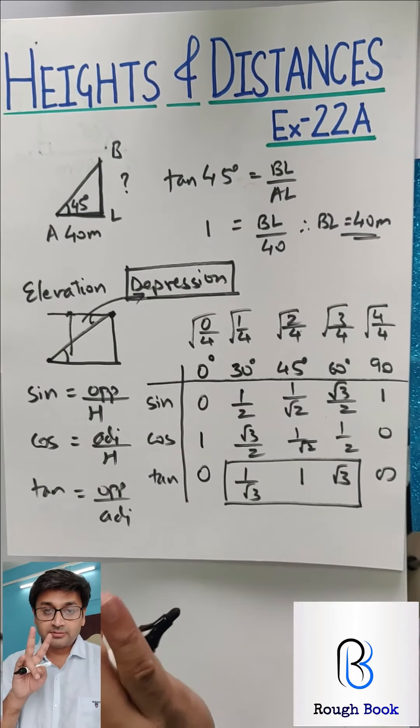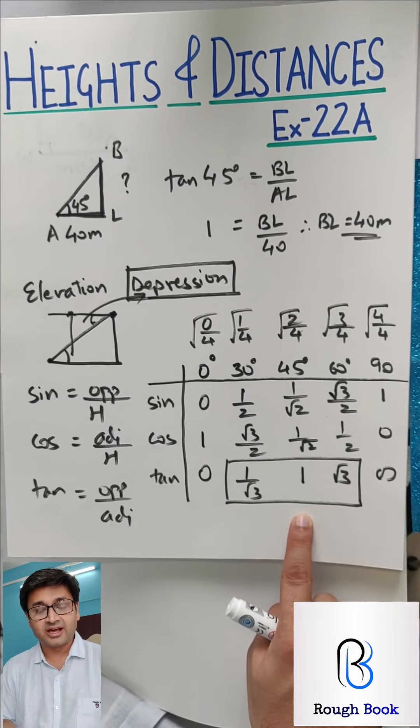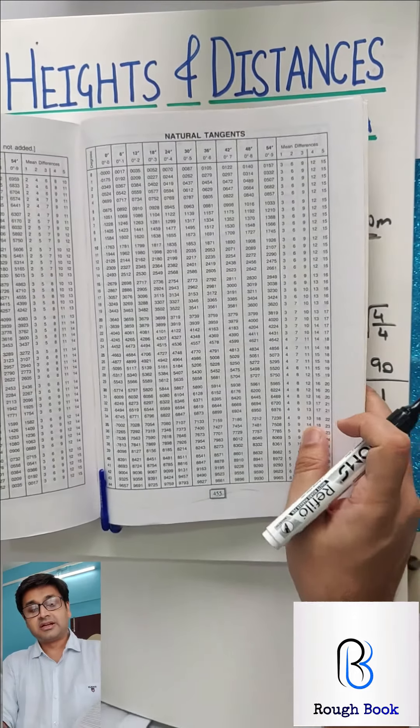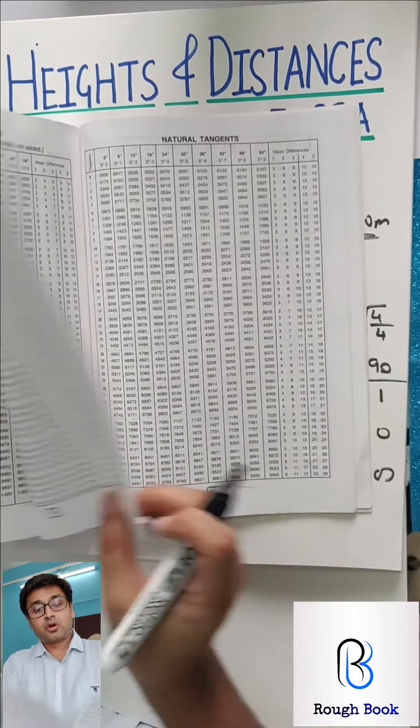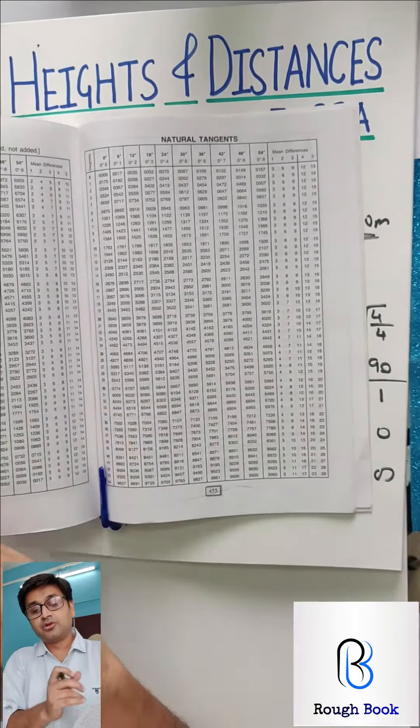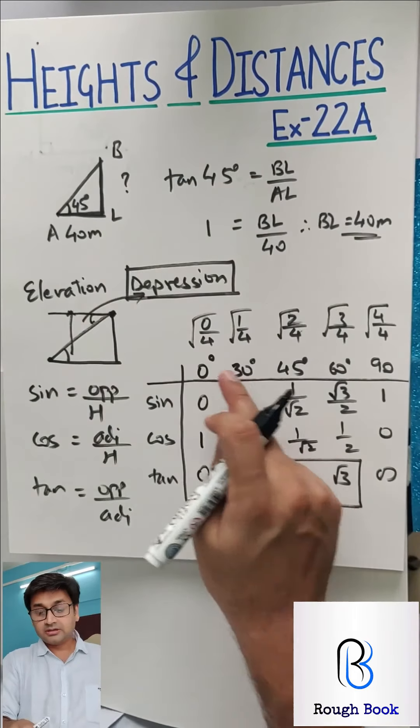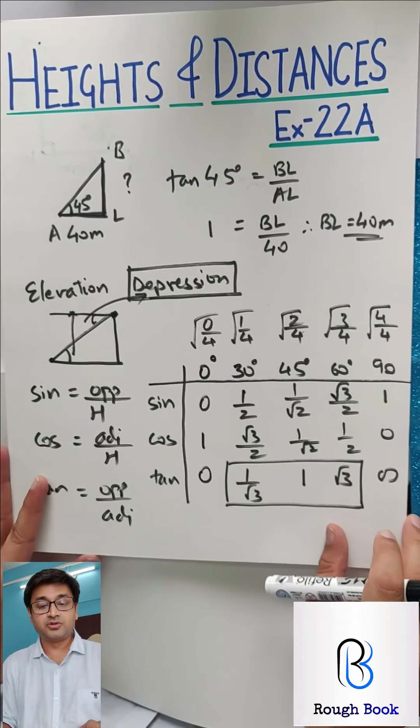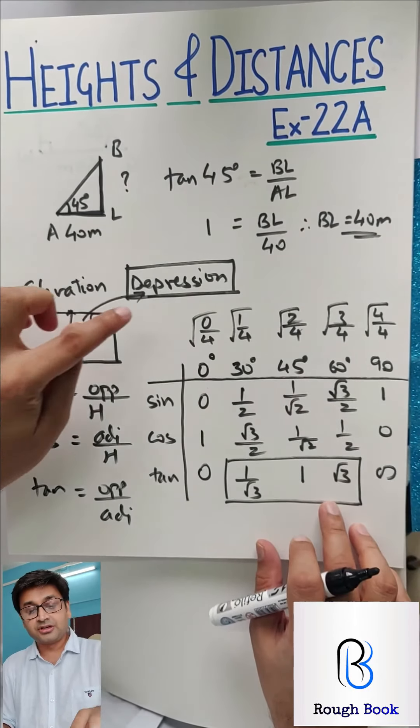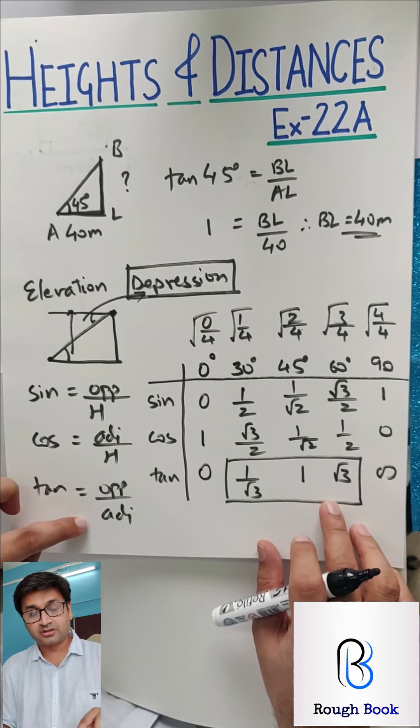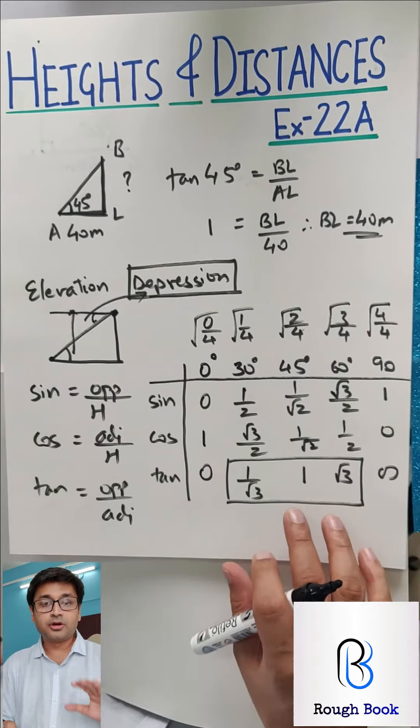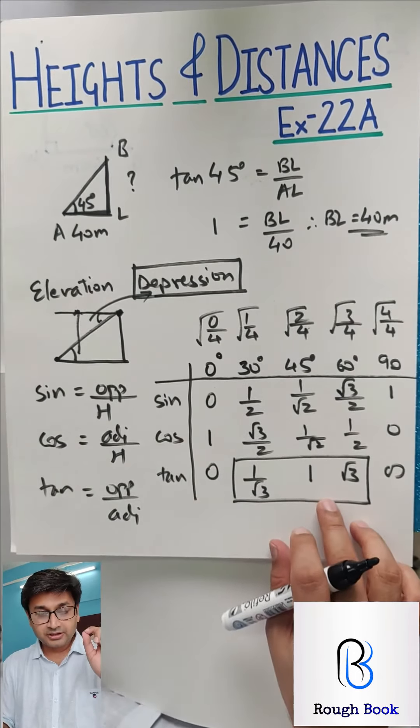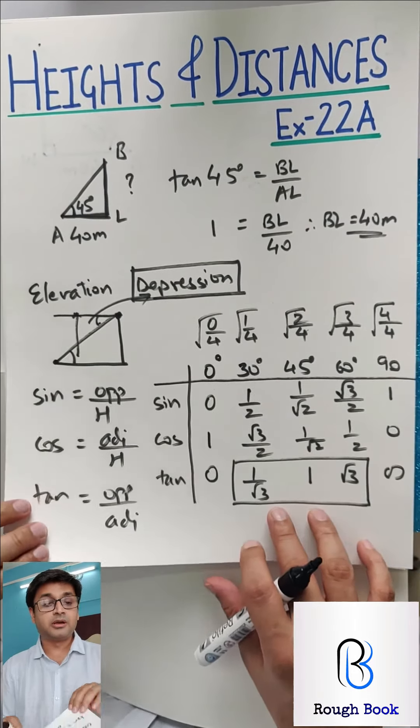So I expect you to know this table by heart. You are going to use two tables. One is this, which we don't call it as table. These are just values. And second is the table behind the textbook. So we are going to use these values if the numbers are not these numbers, if they are not standard angles, in that case we will go behind and use the table. So this much - elevation, depression, sin, cos, tan, opposite, hypotenuse and these values. If you know this, you are through with this chapter. If you don't know, take a screenshot, print it, put it on your board. Your life will become easier.